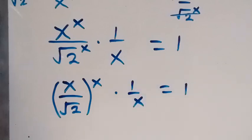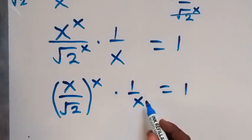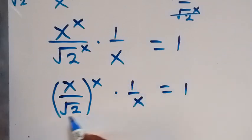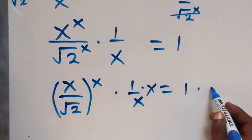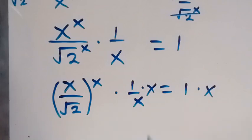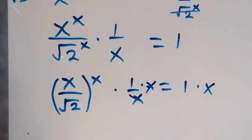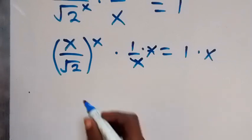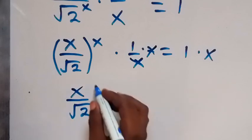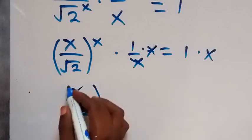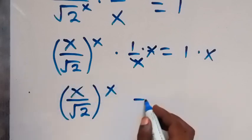Let's remove the 1 over x — that means we multiply both sides by x. When we multiply this side by x it cancels out, and multiplying the other side by x gives us x over root 2 raised to power x, which equals x.